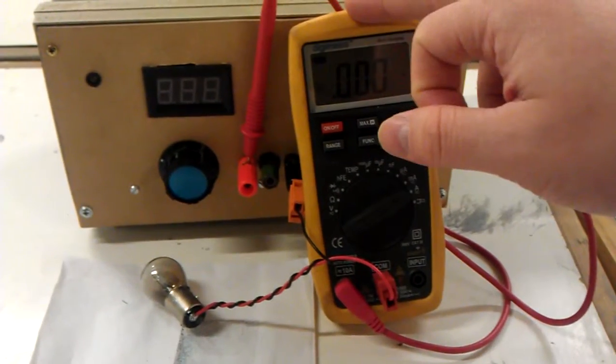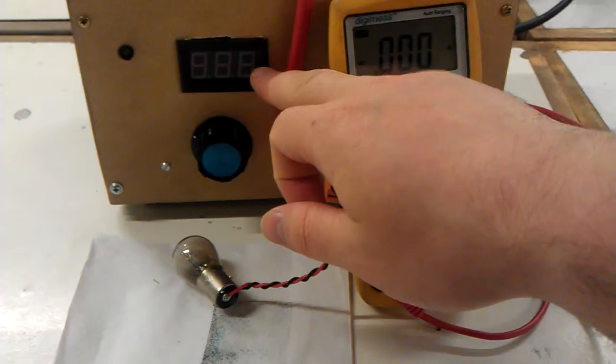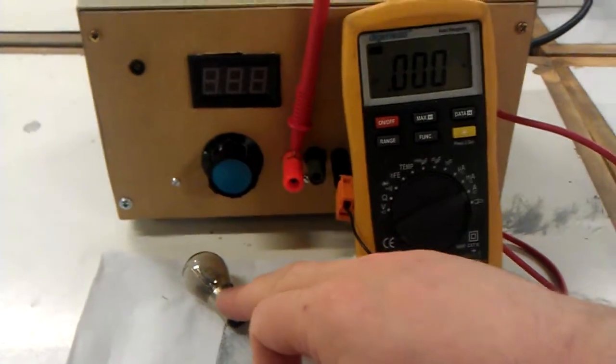We've got a yellow multimeter connected up as an ammeter, there's the voltmeter on the output, the power supply, here's a light bulb. It's a 12 volt, 5 watt light bulb.